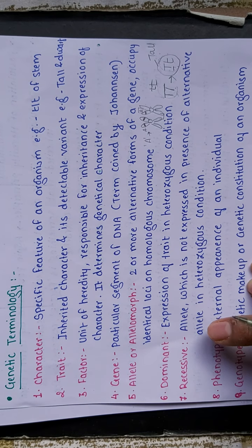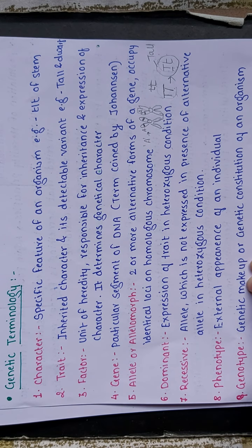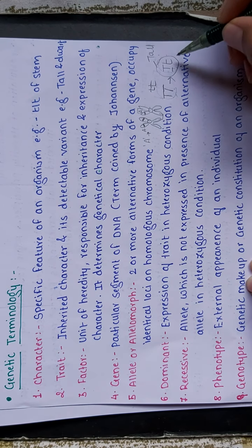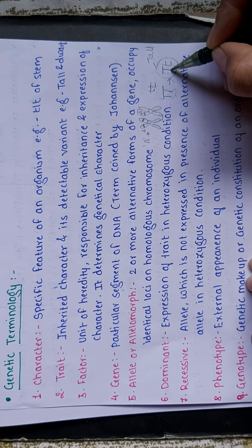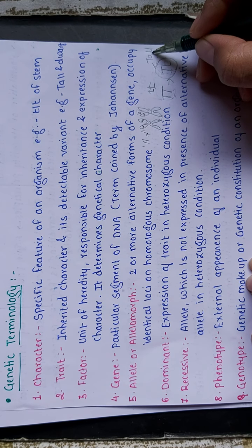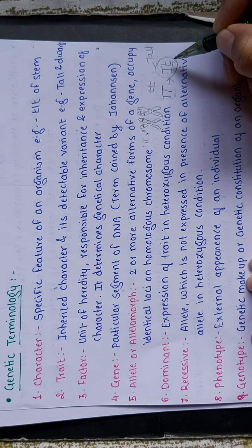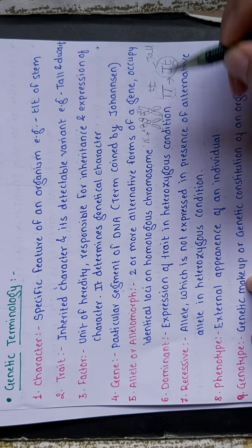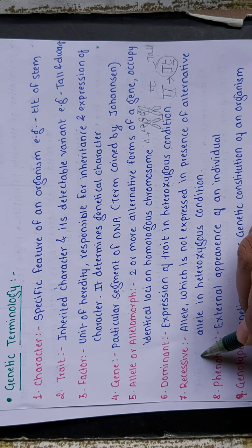'Recessive' is the allele which is not expressed in the presence of an alternative allele in heterozygous condition. In the heterozygous condition, the dominant form expresses tallness, while the recessive allele's expression is suppressed by the dominant one — that is why it is called recessive.